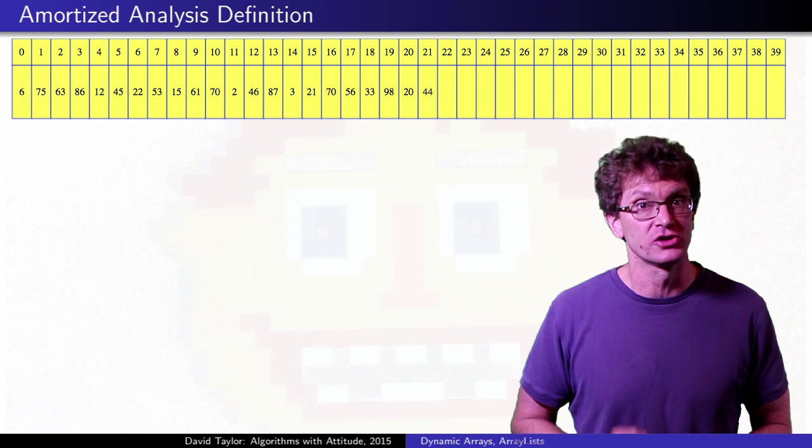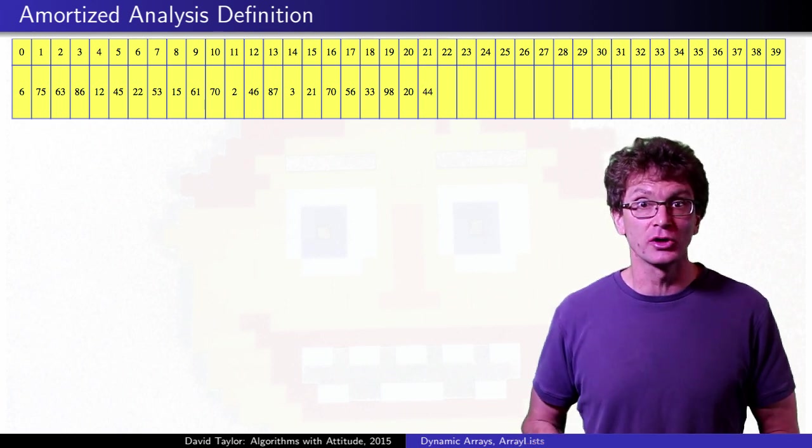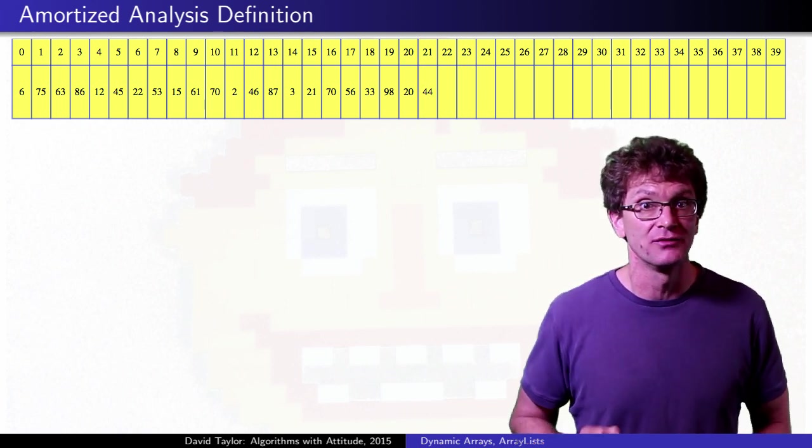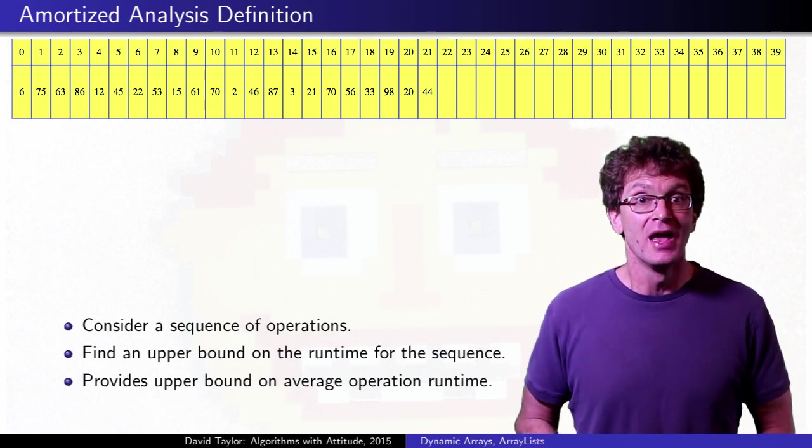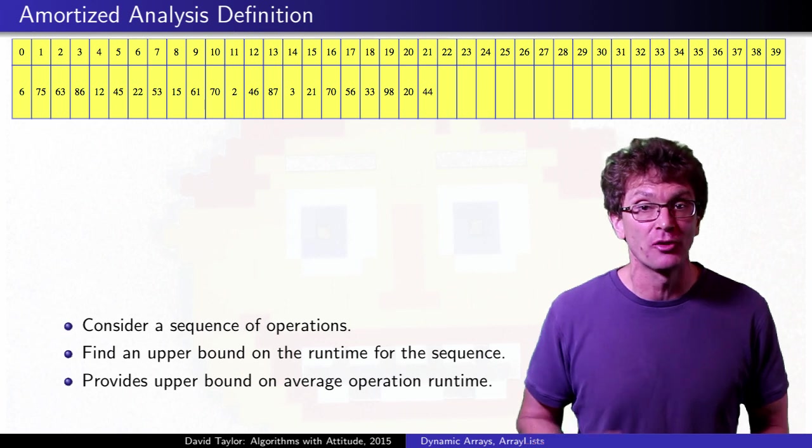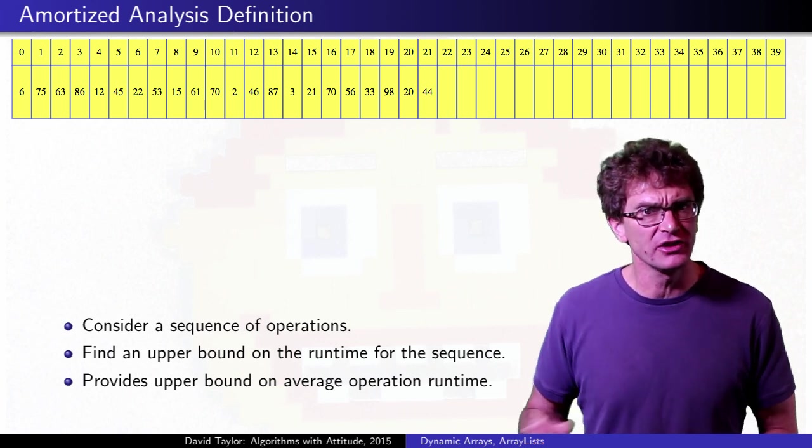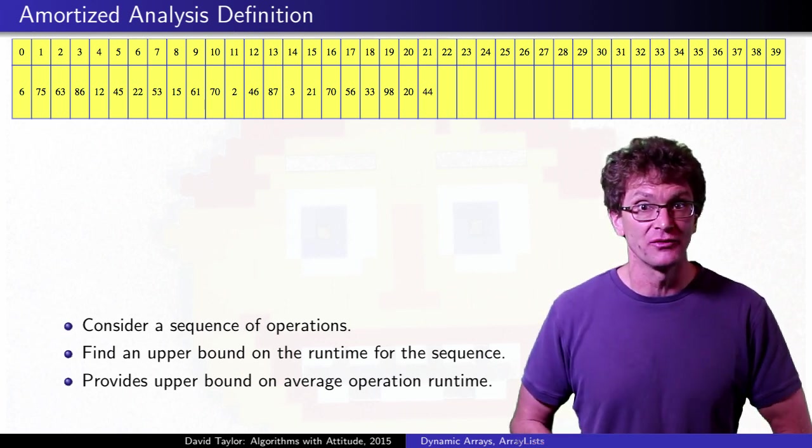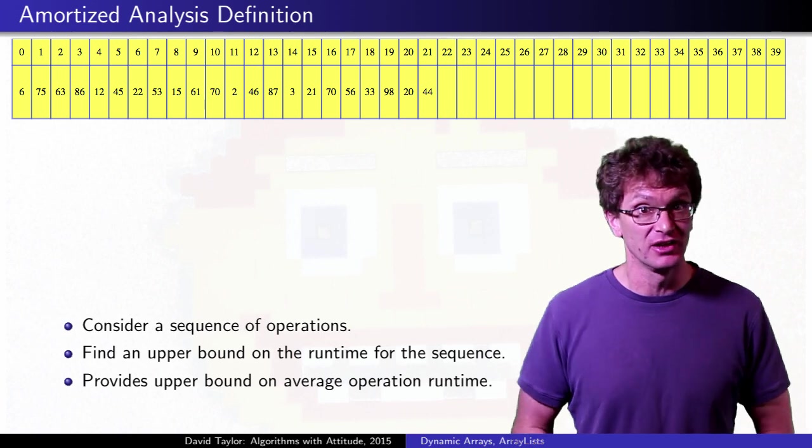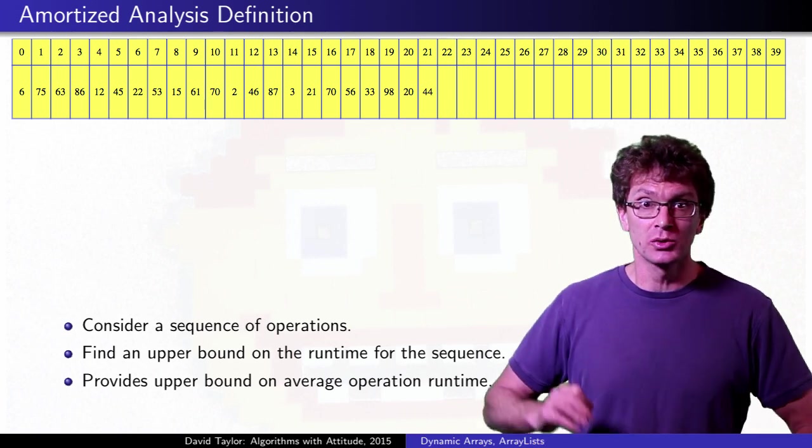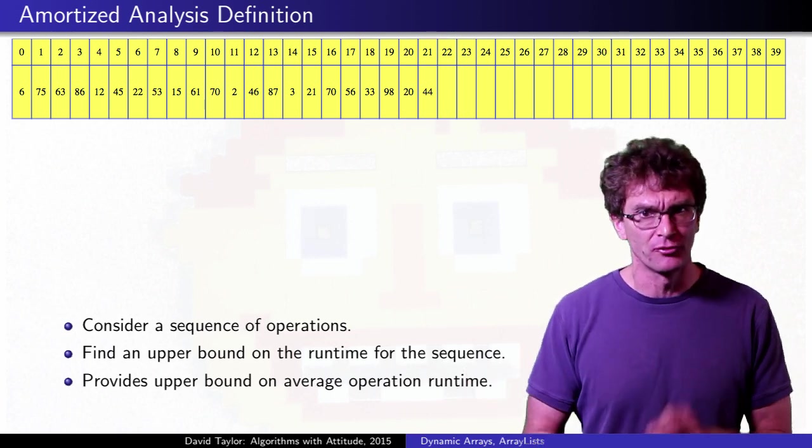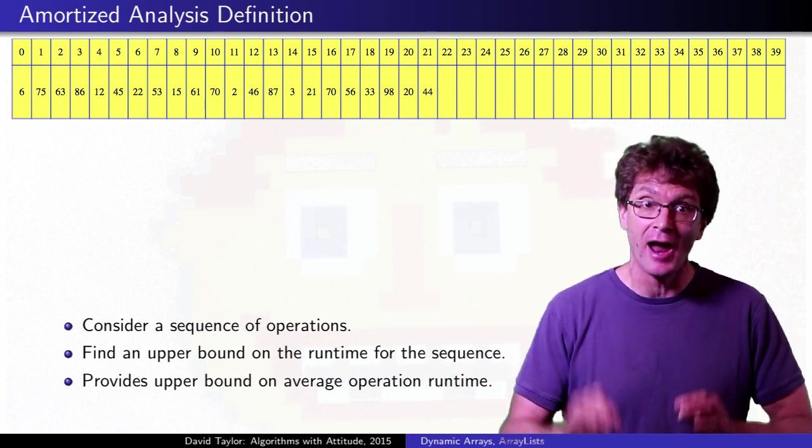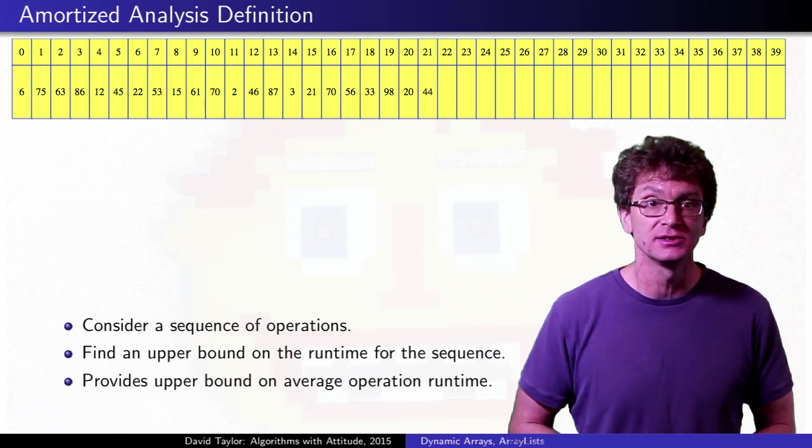This is called amortized analysis. Instead of looking at the cost of each operation individually, we consider the total runtime for an entire sequence of operations, and use this to get the average performance per operation. For this data structure, the average performance of inserting to the back of the list is constant time. You can look at the best case average performance per insertion, or the worst case average performance, or even the average case average performance, they are all constant time.